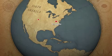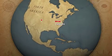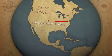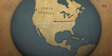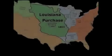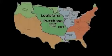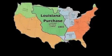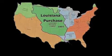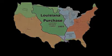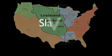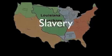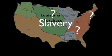After President Thomas Jefferson acquired the Louisiana Purchase in 1803, the United States doubled in size. This purchase gave the United States control of the vast lands west of the Mississippi. As Americans pushed west, the issue of slavery came to the forefront. The conflict came from this question: would the new territories of the United States be slave or free?